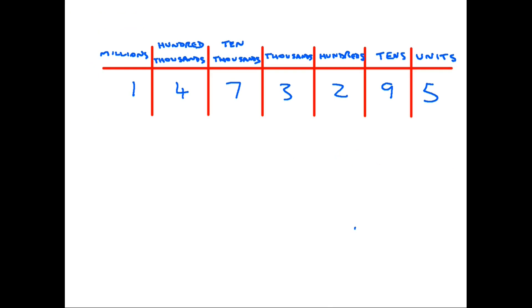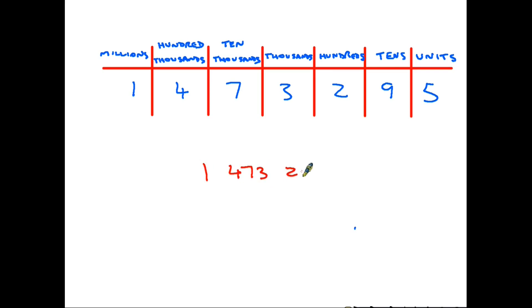And then the million on the end: 1 million, 473,295. Let's look at the way I said that number — I said '1 million... 473,295.' Hopefully you can hear a pause in my voice as I say that. As I pause, I've left a gap. What we tend to do is, rather than leave a gap, we put in a comma.